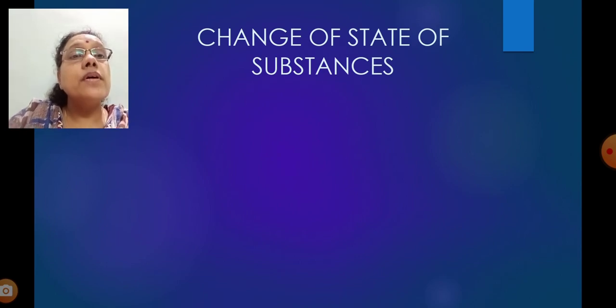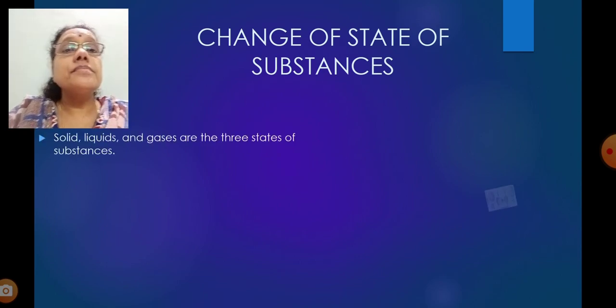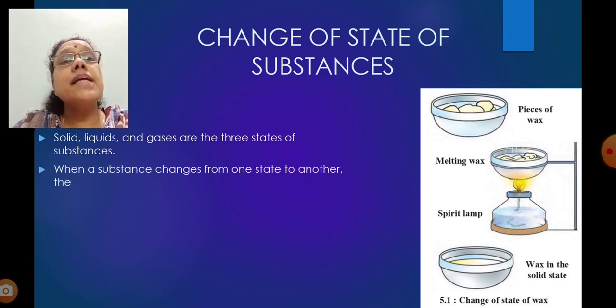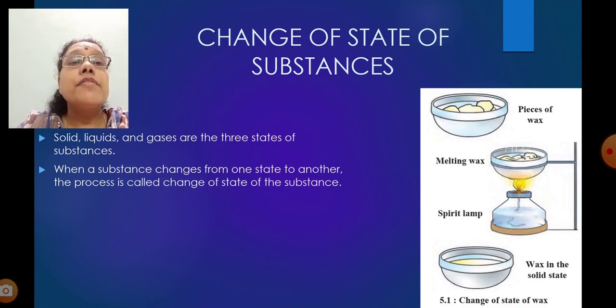Change of state of substances. Solid, liquid and gaseous are the three states of substances. When a substance changes from one state to another state, the process is called change of state of the substance. In the picture, in a dish, pieces of wax are taken and it is kept on a burner. Then it starts melting.